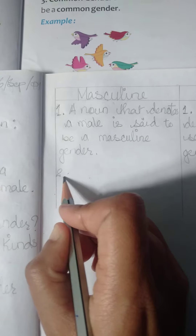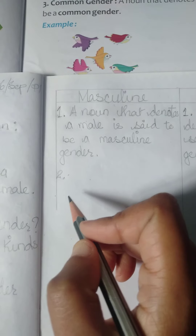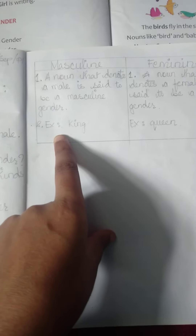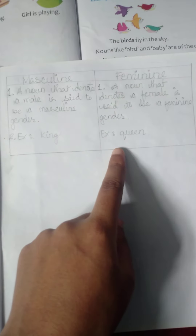You also have to give examples. For masculine, write king; for feminine, write queen. Make the box and write it down.